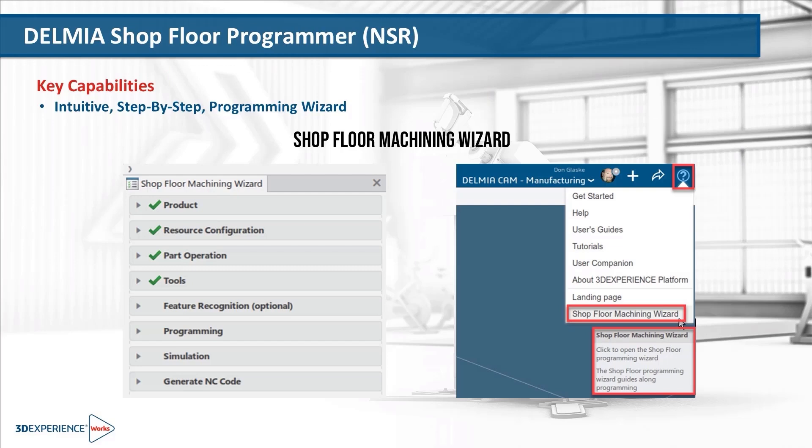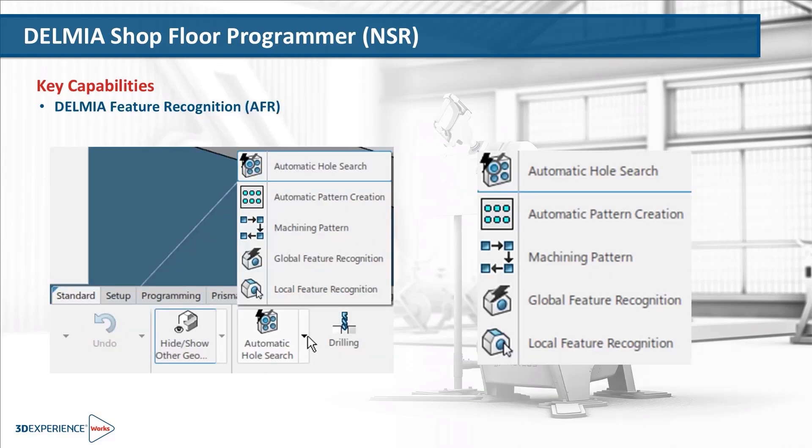Delmia Shop Floor Programmer features an extremely intuitive user interface and a step-by-step process flow with the Shop Floor Programming Wizard. Program faster with automatic feature recognition — the same technology used in SolidWorks, SolidWorks CAM, CamWorks, and CATIA.